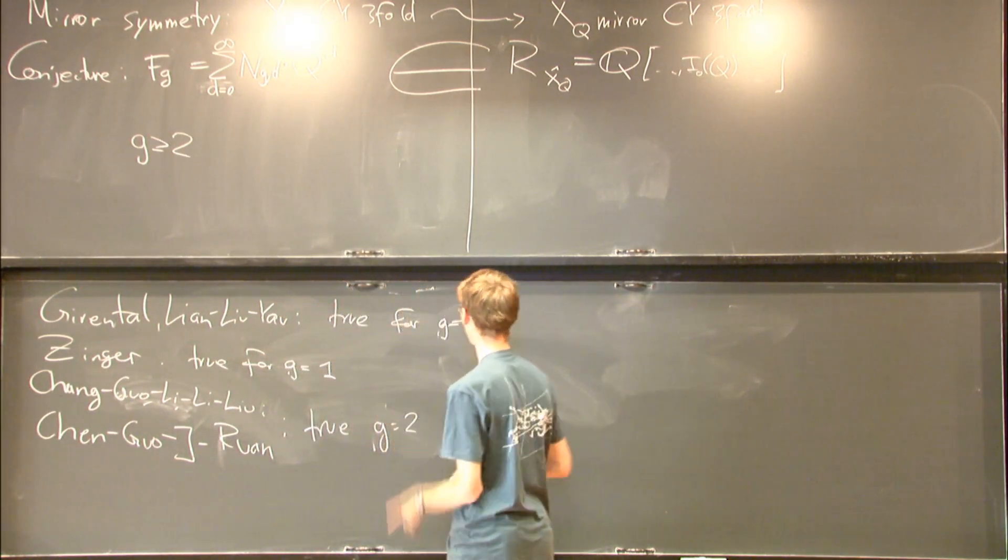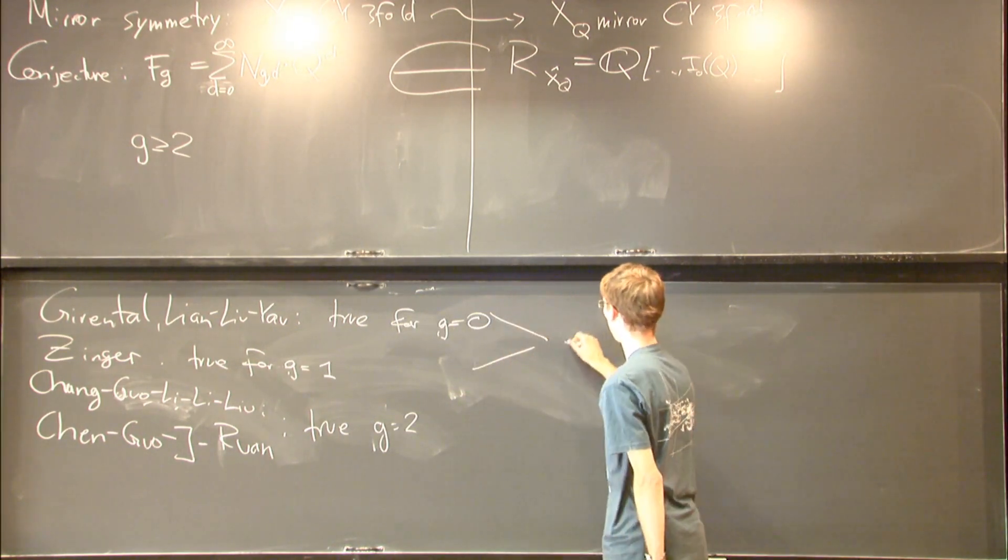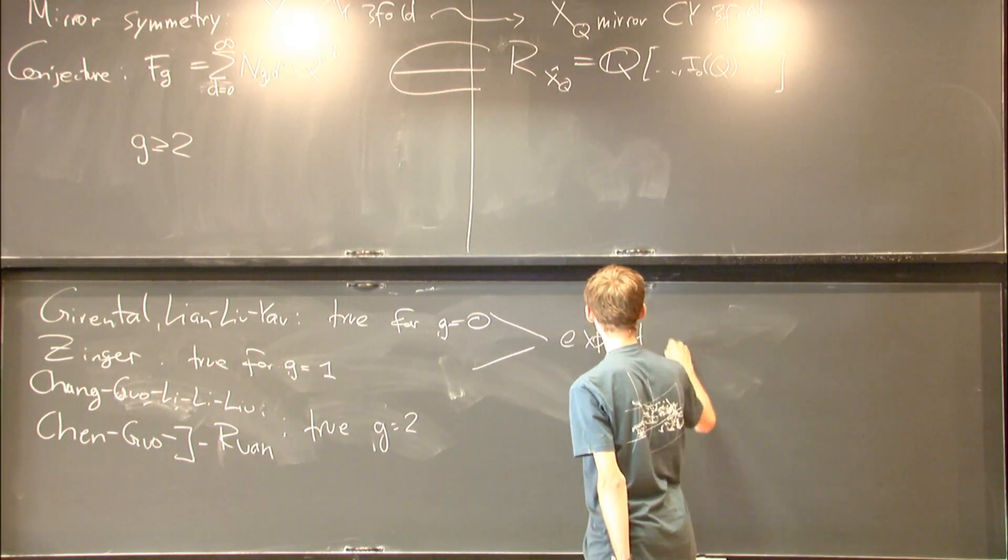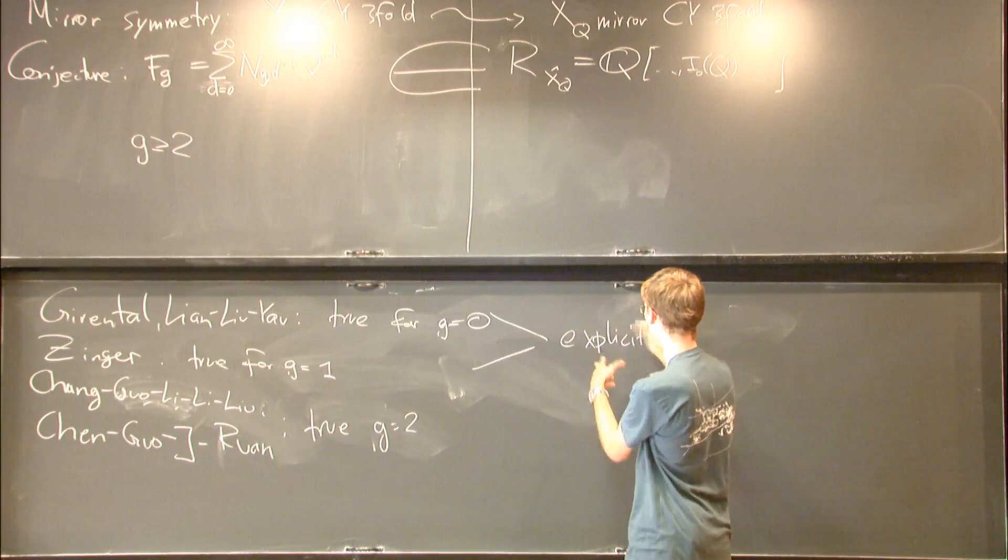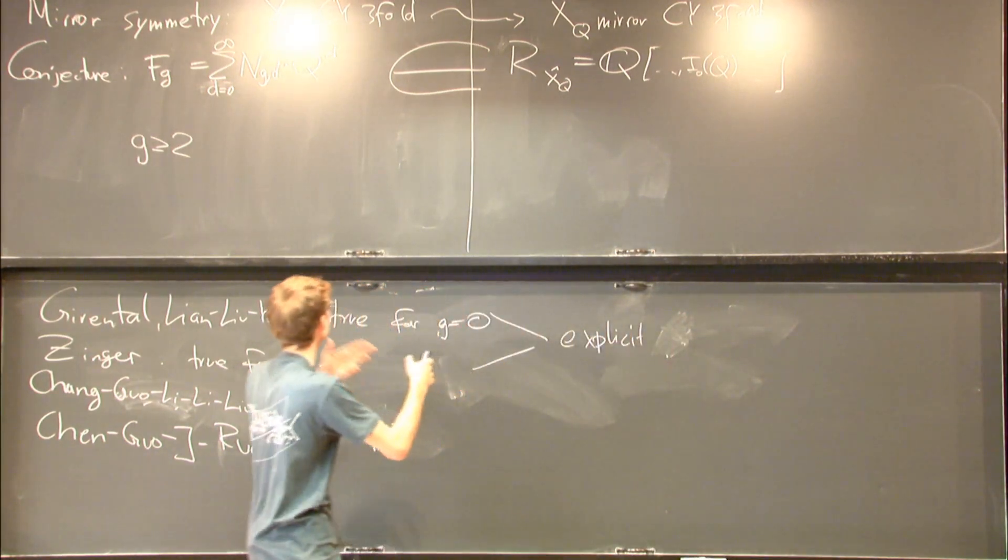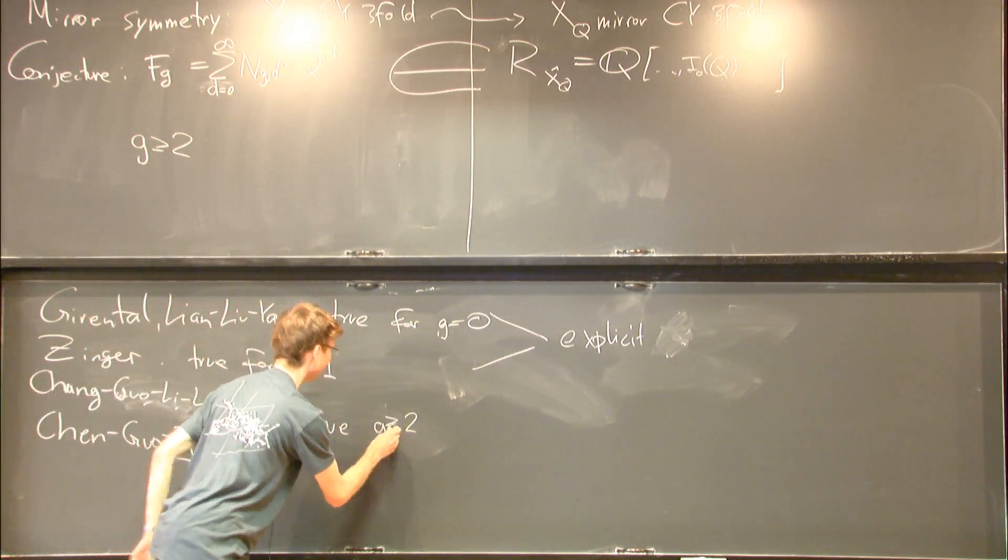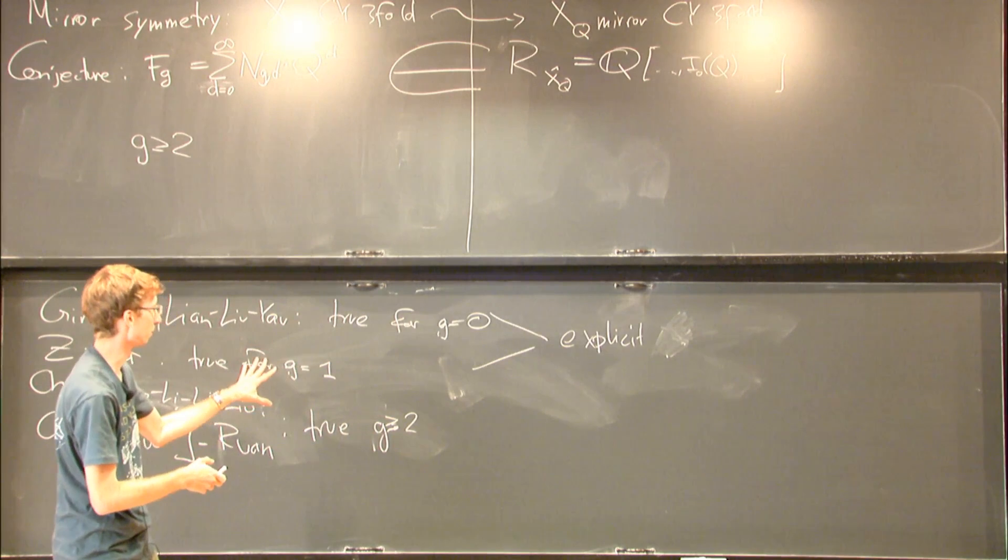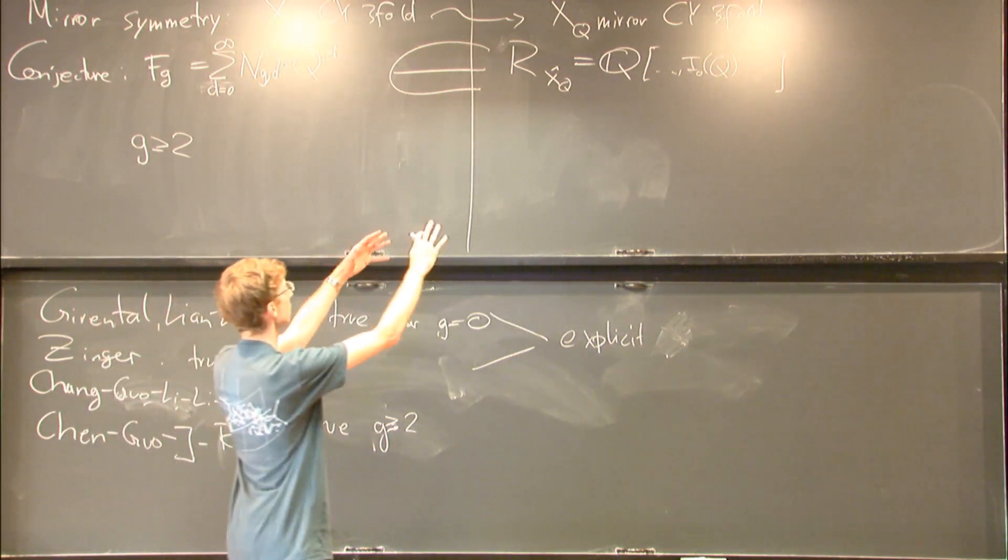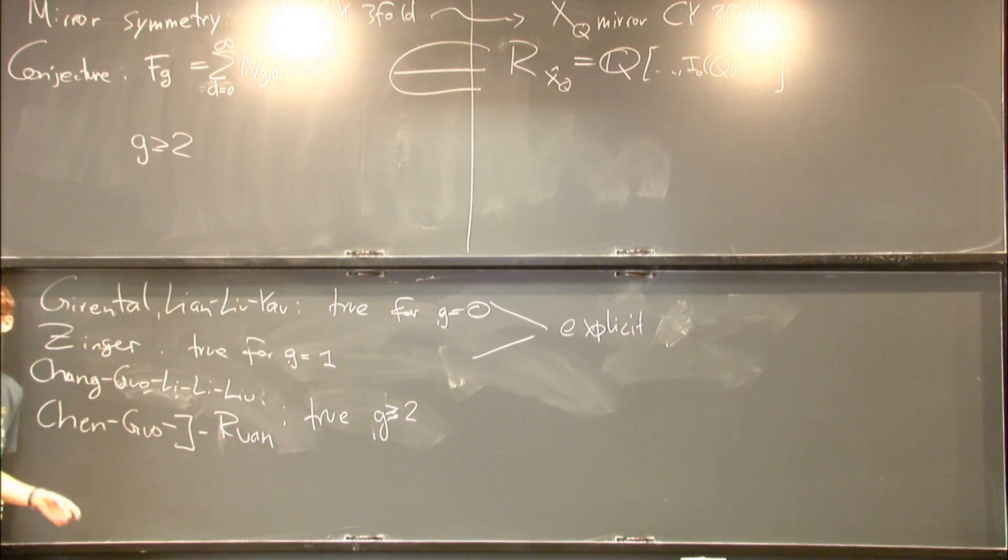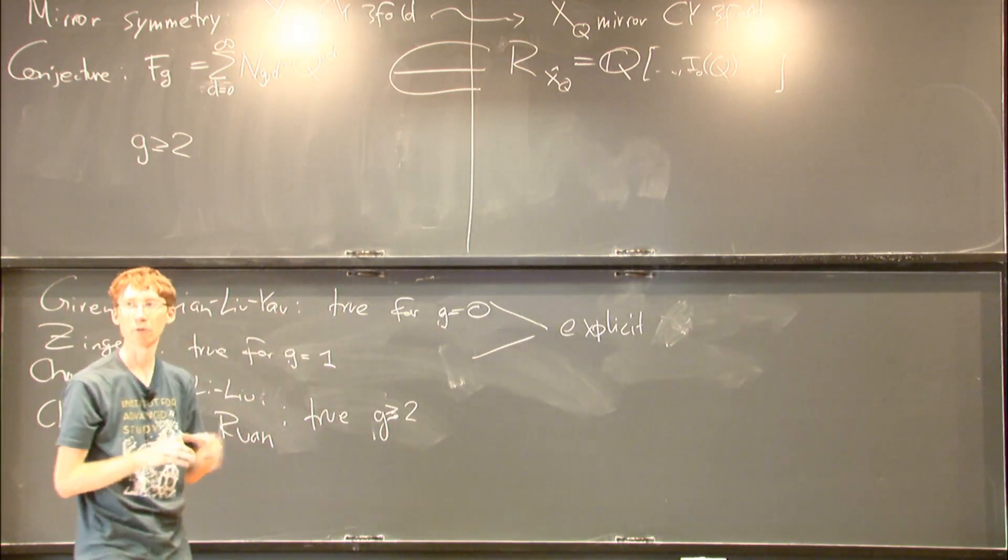I should also say - in these two cases, you can actually write down explicit formulas. In these two cases it's explicit. You can write down explicit formulas for Fg, whereas for higher genus - for genus 2 we also have a formula. In general, we only know that it can be expressed in terms of these certain series. It lies in that ring - you should think of that ring like a ring of modular forms, so it's special, not every function.